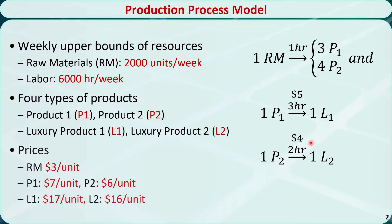The purchasing price of raw material is $3 per unit. The selling prices of product 1 and product 2 are $7 and $6 per unit, respectively. The selling prices of luxury product 1 and luxury product 2 are $17 and $16 per unit, respectively. We want to maximize the company's weekly profit.